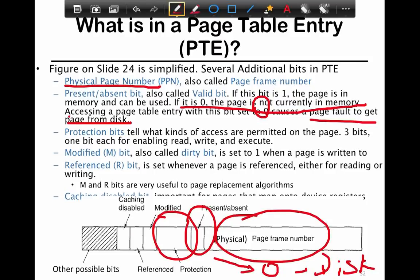You have a modified or dirty bit, which tells you whether the page was written to. If it was written to at the time of replacement from memory, you would have to send it back to the disk. If not, you can just drop it, saving the cost of writing back.